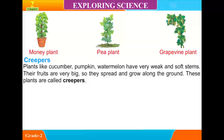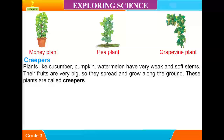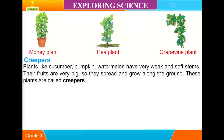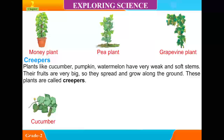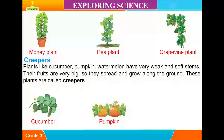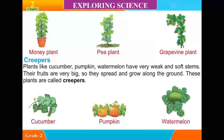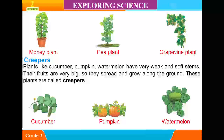Creepers. Plants like cucumber, pumpkin, and watermelon have very weak and soft stems. Their fruits are very big, so they spread and grow along the ground. These plants are called creepers. Examples: Cucumber, Pumpkin, Watermelon.